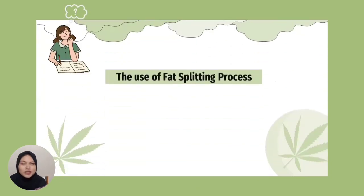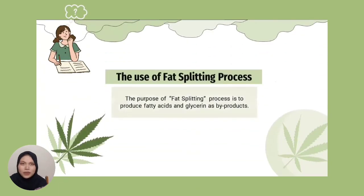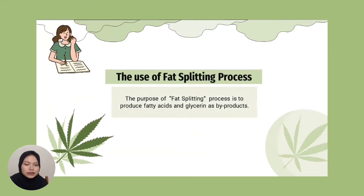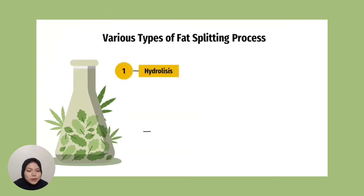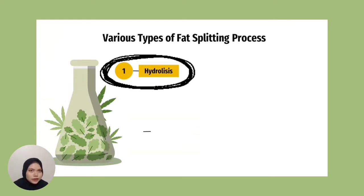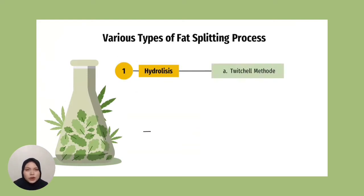What is the use of the fat splitting process? The purpose is to produce fatty acids and glycerin as a by-product, which will then be processed into oleochemical products. Fat splitting can be carried out using various types of processes, one of which is the hydrolysis process. In this video, we split the hydrolysis process into three methods.